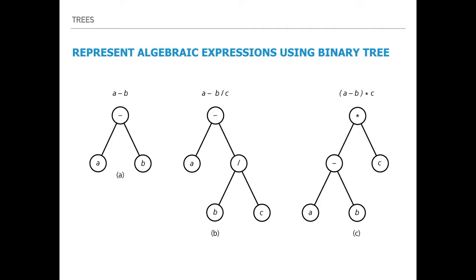Using a tree traversal technique, the compiler manages to evaluate this mathematical expression and find the result. For a statement like a minus b divided by c, the minus is the root. The left subtree is the operand a, and the right subtree represents b divided by c — where the division operator is the root of that right subtree and b and c are its operands.